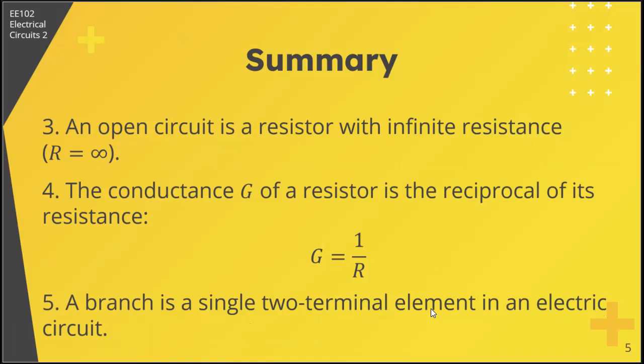Third, an open circuit is a resistor with infinite resistance, that is R equals infinity. Fourth, the conductance G of a resistor is the reciprocal of its resistance, so G equals 1 over R. Fifth, a branch is a single two-terminal element in an electrical circuit.